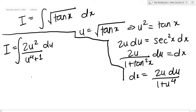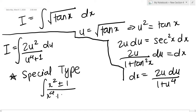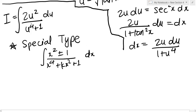Now if you know this type, you must have noticed it — but in case you didn't, this is what I call a special type. The form is: (x² ± 1) / (x⁴ + kx² + 1) dx, where k is just an arbitrary constant. The next steps I do with this integral can be done for any integral in this form.